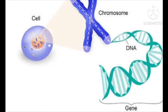A gene is a unit of inheritance in living organisms. It controls the transfer of a hereditary characteristic from parents to offspring. This means your parents pass some of their characteristics on to you — if your father has brown eyes, you may also have brown eyes; if your mother has curly hair, you might also have curly hair. However, different combinations of genes from parents result in different characteristics.